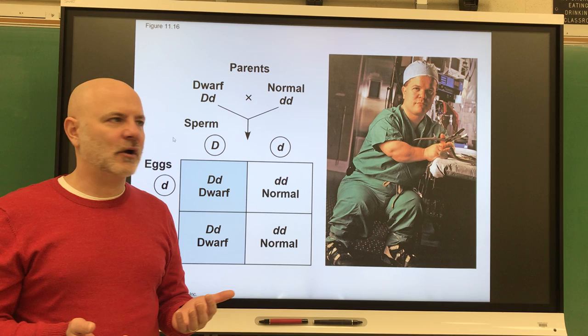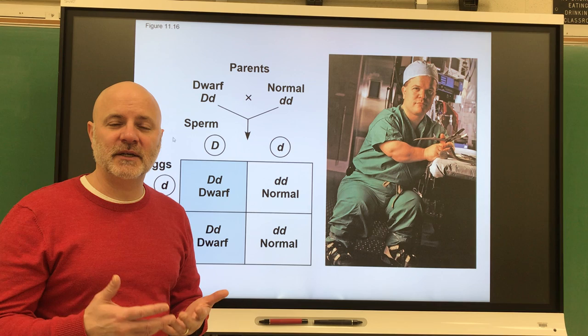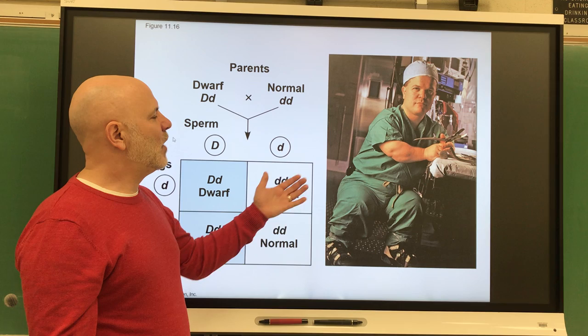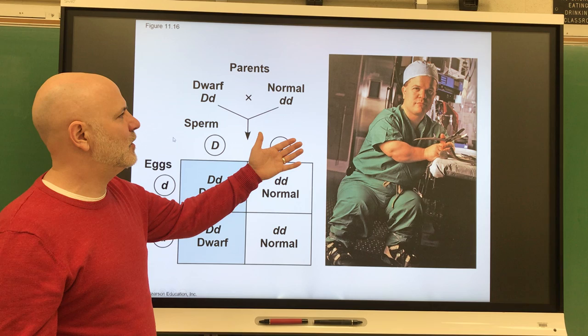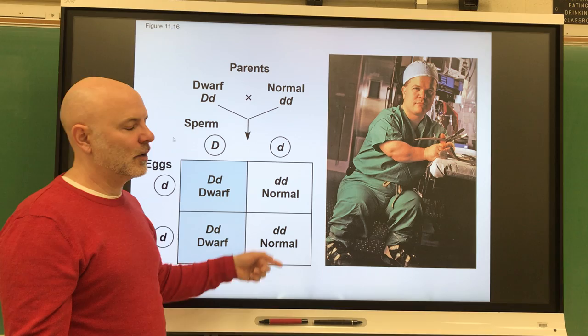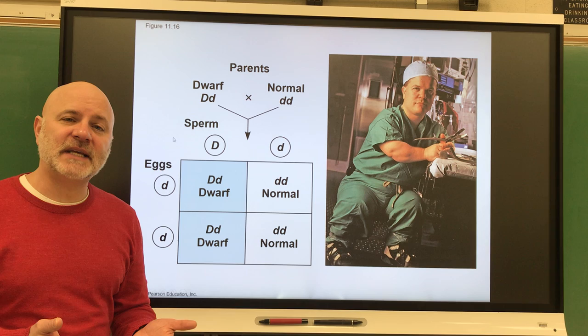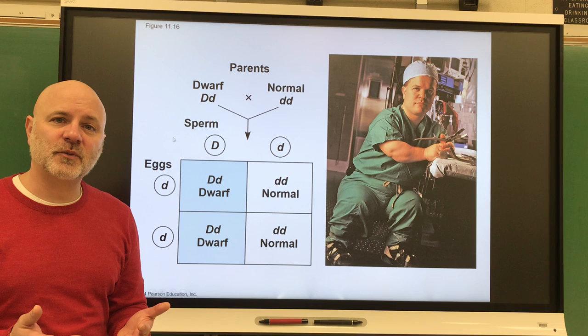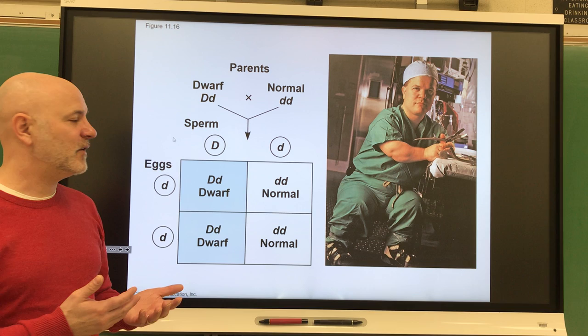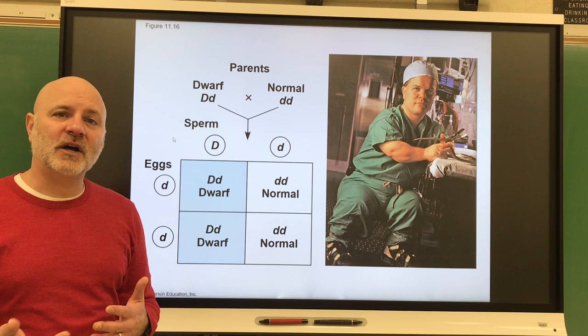Peter Dinklage, who played Tyrion Lannister in Game of Thrones, he has achondroplasia. What we see here is if somebody who has achondroplasia has children with somebody who does not, they have a 50-50 chance of having somebody who has achondroplasia or doesn't have achondroplasia. But if two people with achondroplasia have children together, a quarter of their fertilizations will result in that lethal combination of two alleles. 50% will be of an individual who has achondroplasia, and then a quarter of their offspring will not have achondroplasia.